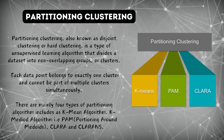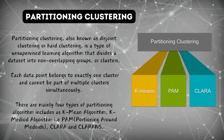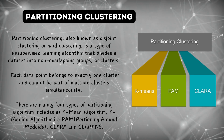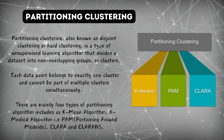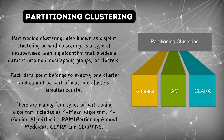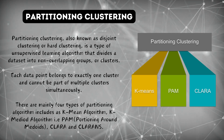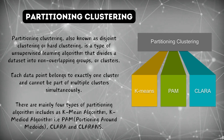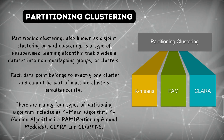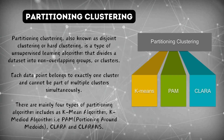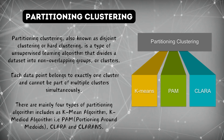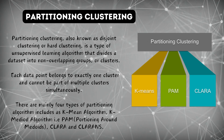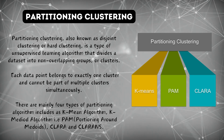The other type of clustering is partitioning clustering, also known as disjoint clustering or hard clustering. It is a type of unsupervised learning algorithm that divides a dataset into non-overlapping groups or clusters. Each data point belongs to exactly one cluster and cannot be part of multiple clusters simultaneously. There are mainly four types of partitioning algorithms: k-means algorithm, k-medoids algorithm (partitioning around medoids), CLARA, and CLARANS.